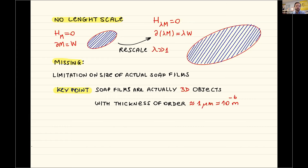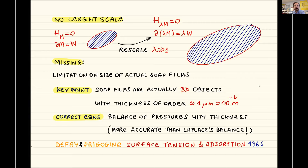To understand this threshold, you have to describe soap films as three-dimensional objects, understand their thickness, and leave the simplified realm of surfaces. Soap films are actually 3D objects with a thickness on the order of micrometers. So I would like to do what Laplace and Young did — derive the correct equation for a soap film seen as a three-dimensional object. This argument is not new; it can be traced back to a book by de Fay and Prigogine on surface tension from 1966.